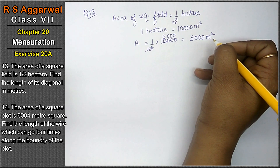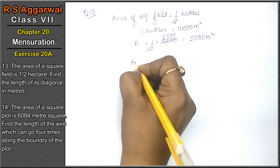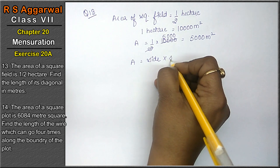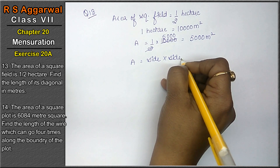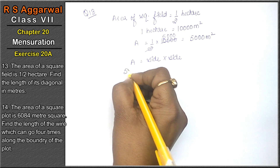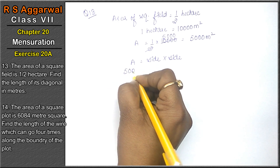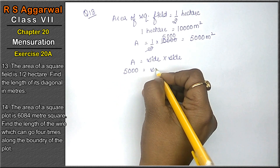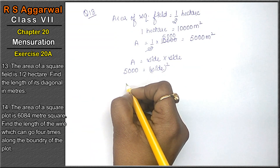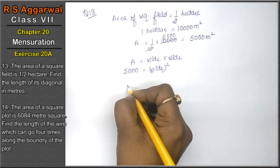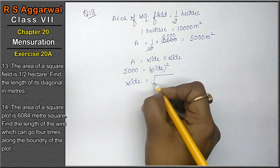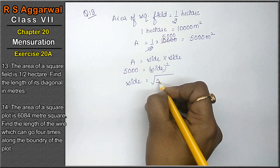Square में सारी sides equal होती हैं, तो area = side × side. और हमें निकालनी है diagonal. तो area = 5,000 = side². Side equals to √5000.